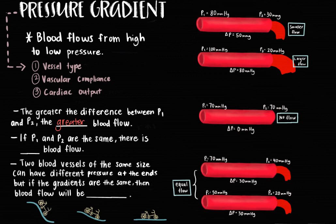In the case where there is no pressure gradient — when both P1 and P2 are the same — there will be no blood flow. For example, if P1 and P2 are both 70 mmHg, there will be no blood flow. Also, blood vessels of the same size can have different pressures at each end, but if the pressure gradients are the same, then blood flow will be the same. For vessel one, P1 is 70 mmHg and P2 is 40 mmHg, giving a pressure gradient of 30 mmHg. For vessel two, P1 is 50 mmHg and P2 is 20 mmHg, also giving a pressure gradient of 30 mmHg, and therefore the same blood flow.